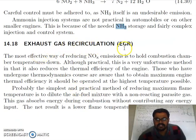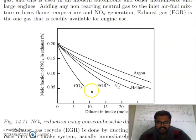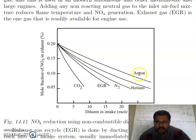Next is exhaust gas recirculation (EGR). The main purpose of EGR is to reduce the operating temperature of the engine. Gases such as CO2, nitrogen, helium, and argon can be used to reduce the overall temperature of the engine by mixing them with the inlet air-fuel mixture.